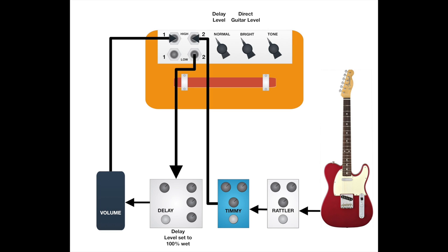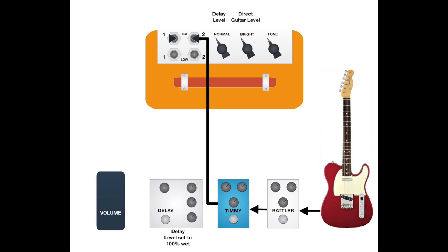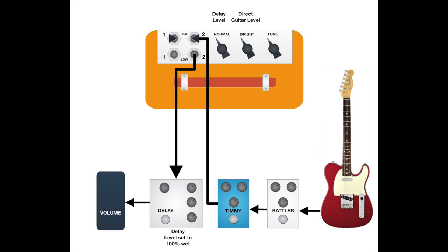When coming out of the pedal board into channel two, this is the direct sound, and the volume on channel two becomes the volume for that direct sound. Where it splits and goes into the Memory Man and through the volume pedal back into channel one — channel one is the overall volume for the Memory Man signal going back in.